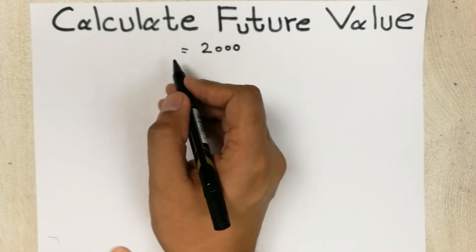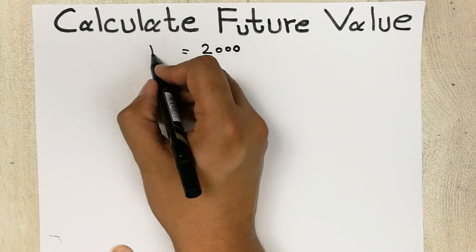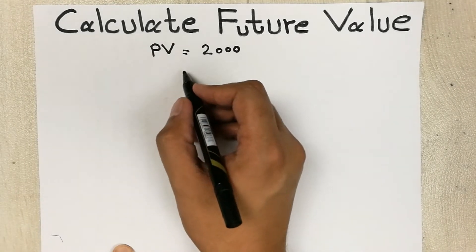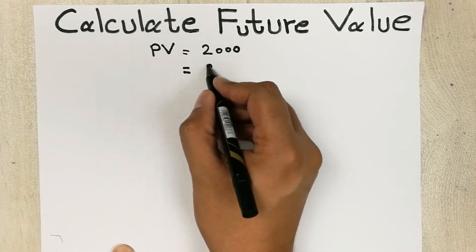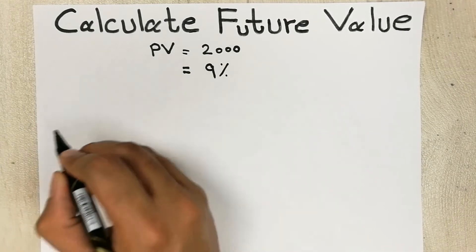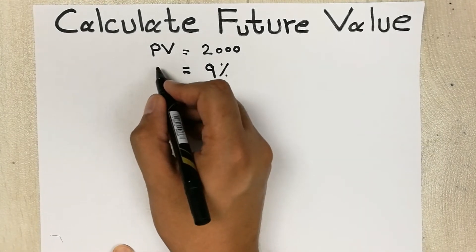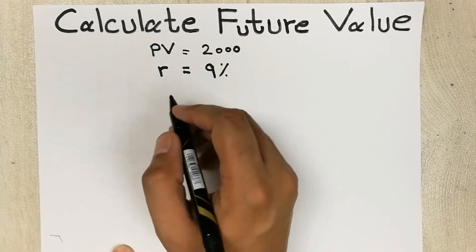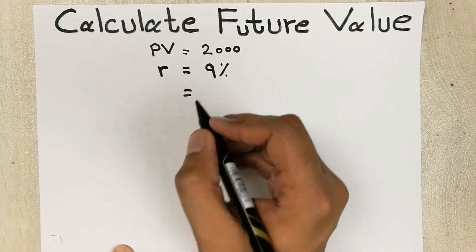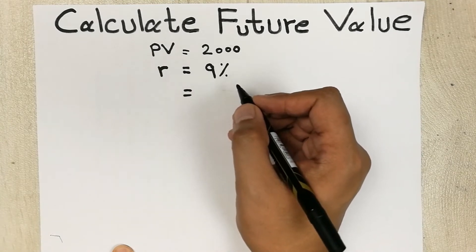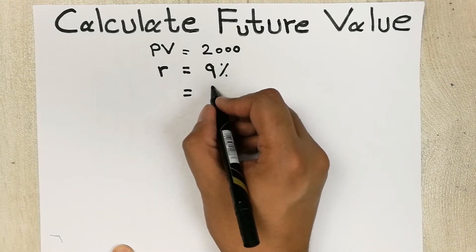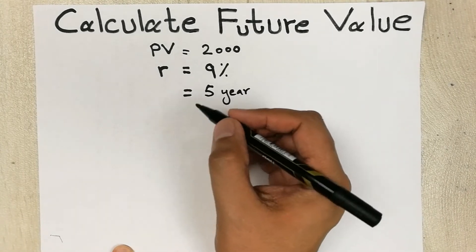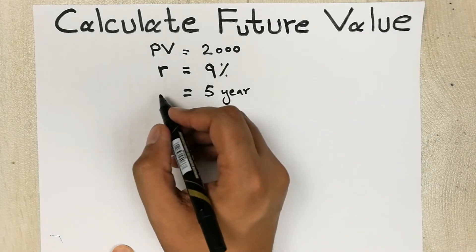We can also say two thousand dollars is the present value, so we write it as PV. Our interest rate is nine percent, which we can write as r. Let's say we continue to invest this amount for a period of five years. Five years is the number of periods, or we can call it as n.